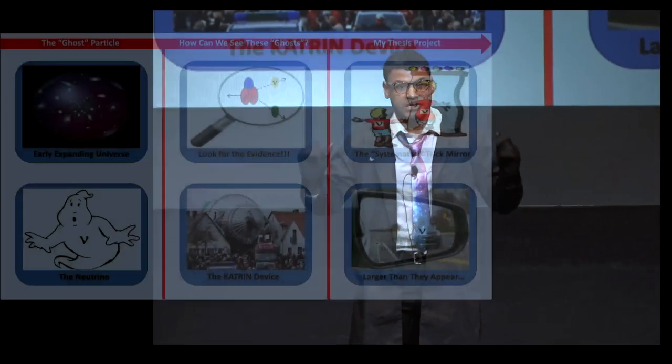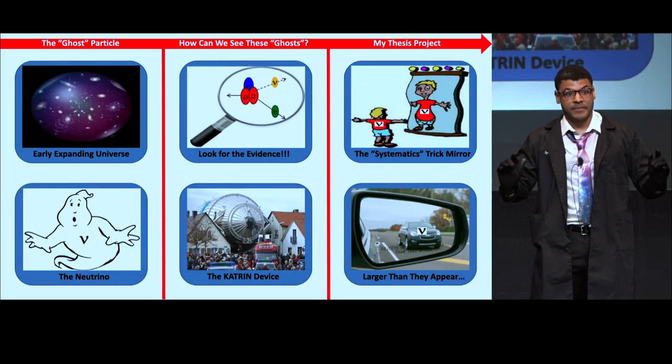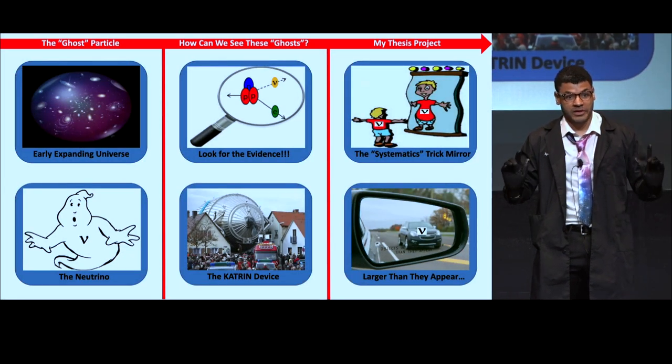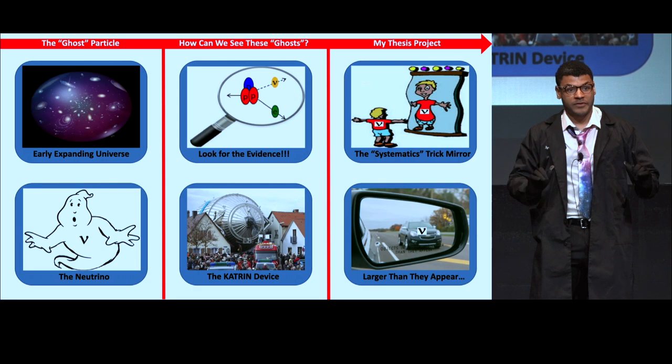After the Big Bang, the universe began to expand at a rapid rate. But just how fast it expanded? The expansion rate of the early universe is tied to the mass of a ghostly particle known as a neutrino. For that reason, it is important for us to know the mass of neutrinos.